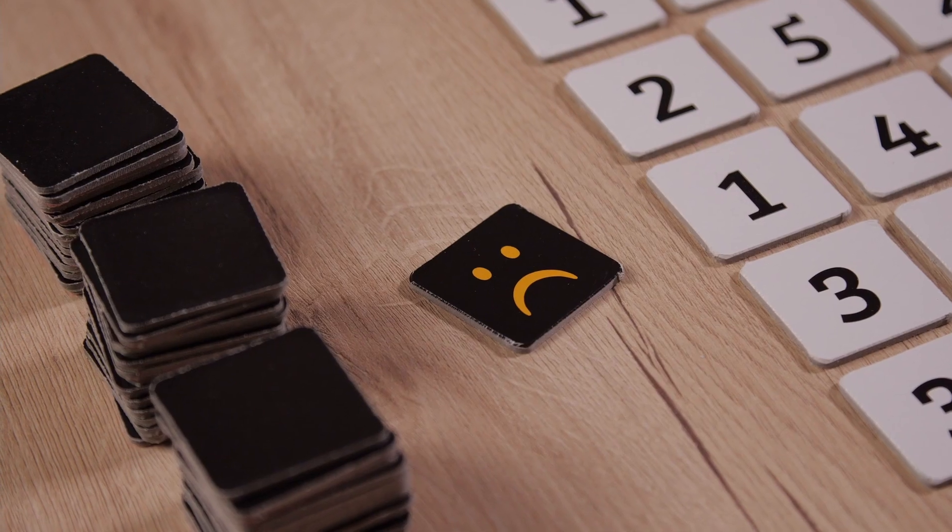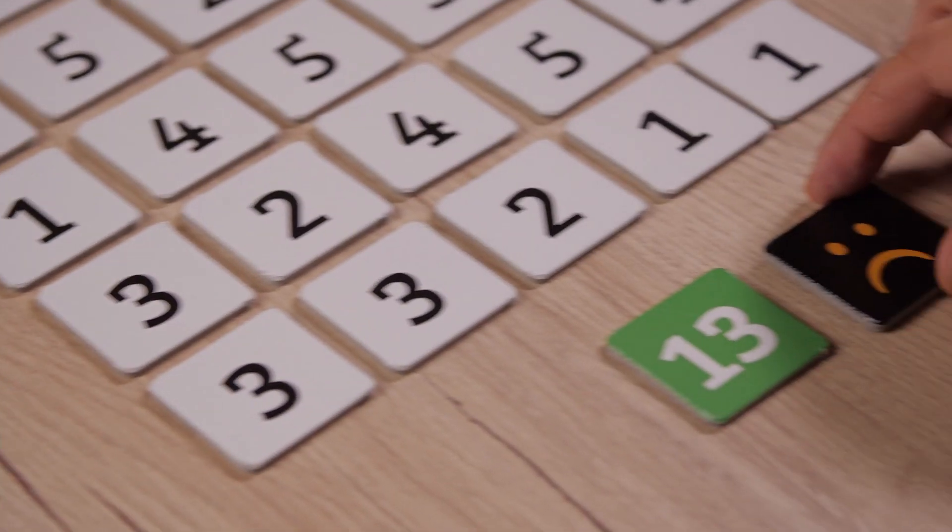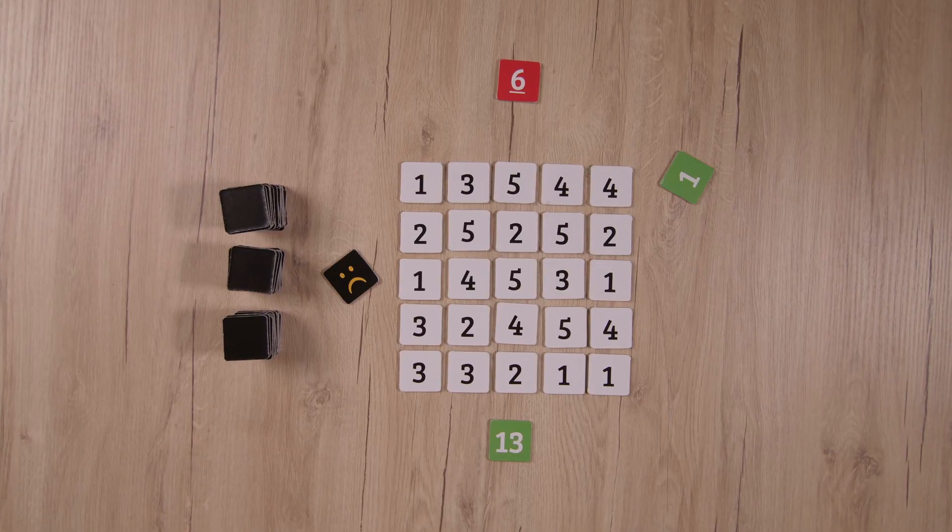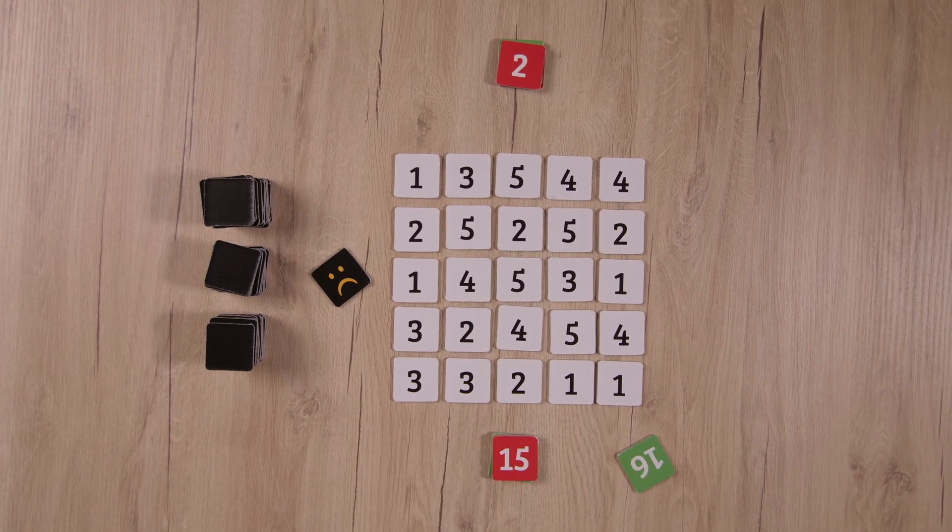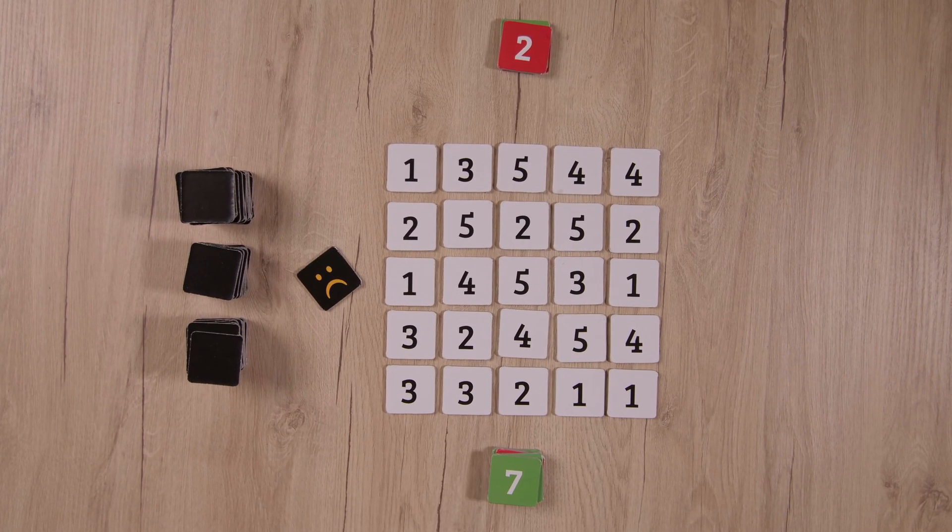If, on the other hand, a player makes an error in their calculations, they must abandon that round and are given the error tile. The winner is whoever is the first to win five goal tiles.